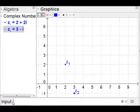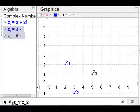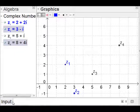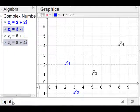I can plot their sum z1 plus z2, which gives me the point 5 plus i at (5, 1), and I can plot their product z1 multiplied by z2, which gives me the point (8, 4) to represent 8 plus 4i.